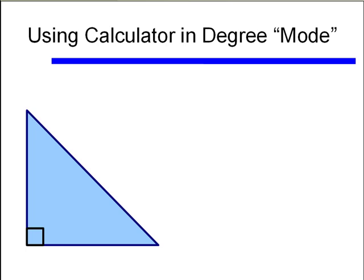Before we talk about how to use our calculator, let's go back to our basic right triangle and look at the 45-45-90 right triangle. This is one of the two triangles I've told you to memorize. We should remember that we can talk about this with legs of length 1 and the hypotenuse length square root of 2.